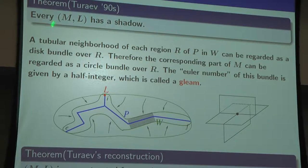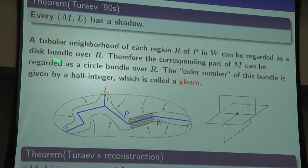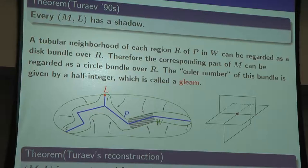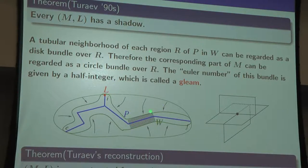By cellular Morse theory, every three-dimensional manifold has a shadow. A tubular neighborhood of each region R of P in W can be regarded as a disk bundle over the region. Since we have a retraction and collapsing, we think of this as a disk bundle over the region. We are interested in the boundary of W, so we look at the boundary of the disk bundle — this is a circle bundle.